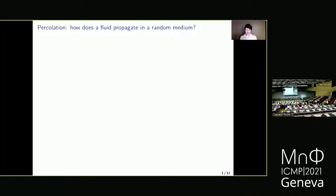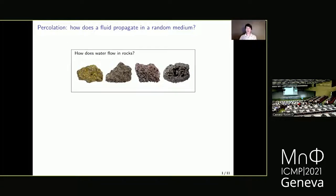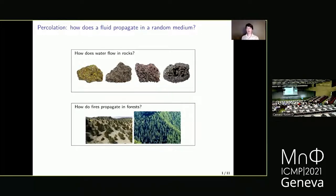Historically, percolation theory was introduced as a mathematical framework aiming at describing the propagation of a fluid in a random medium. For example, in geology, how does water flow in rocks? Or in ecology, how do fires propagate in forests? In both cases, we observe a phase transition phenomenon. If one plunges a rock in water, either the water stays at the surface, or the rock is porous and the water can traverse and propagate inside. For forests, either the forest is sparse and a fire will stay on a few trees, or the forest is dense and a fire will propagate to the whole forest.